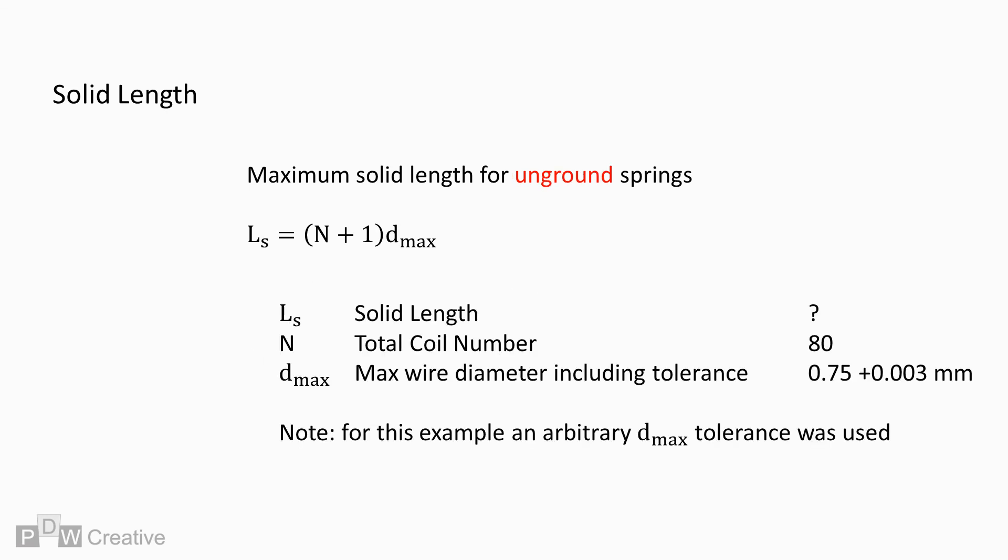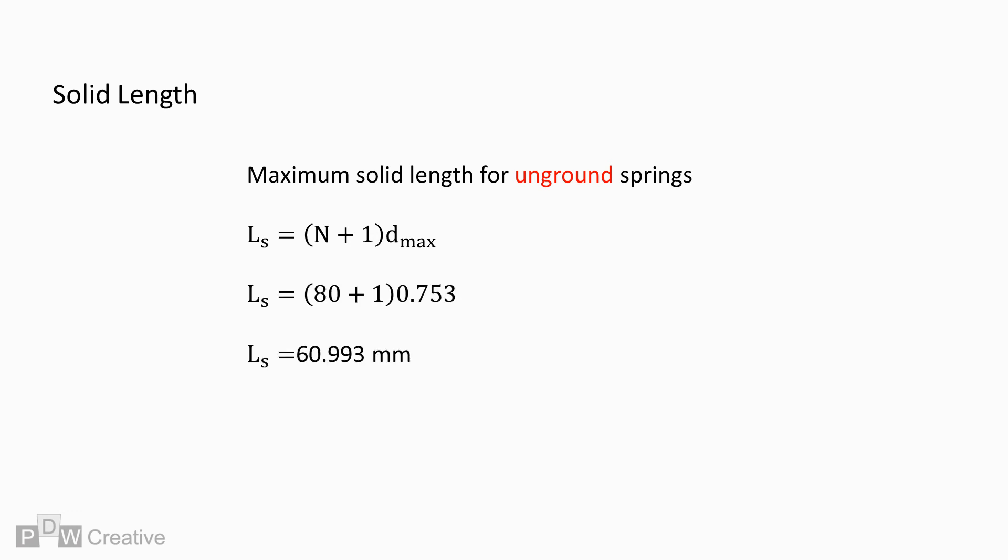The calculation changes for unground springs. In this instance, the wire diameter is not flattened at the tip. So the equation is the number of active coils plus 1 times max wire diameter. The effect of changing from ground to unground means that the solid length becomes 60.993 mm, whereas previously it was 60.8 mm.